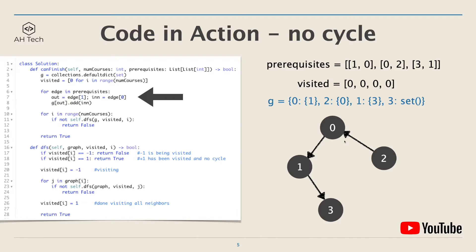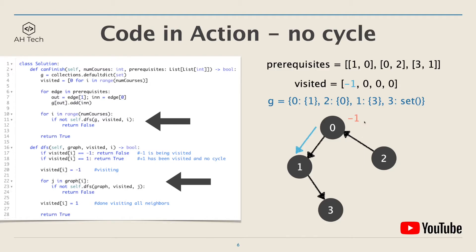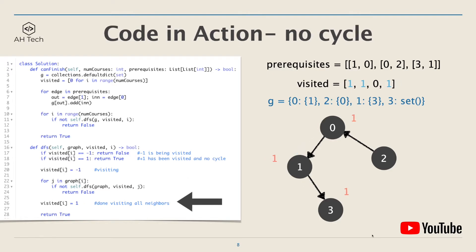Next we start DFS on the graph. Starting from node 0, we flag it as negative 1 in the visited array, then go to its child node 1. We flag node 1 as negative 1 and go to its child node 3. Node 3 is also flagged negative 1, and since node 3 has no children we finish this DFS call with no cycles found along the path. All the previous nodes in the DFS call are then flagged to positive 1, meaning they have been visited and no cycle was detected.